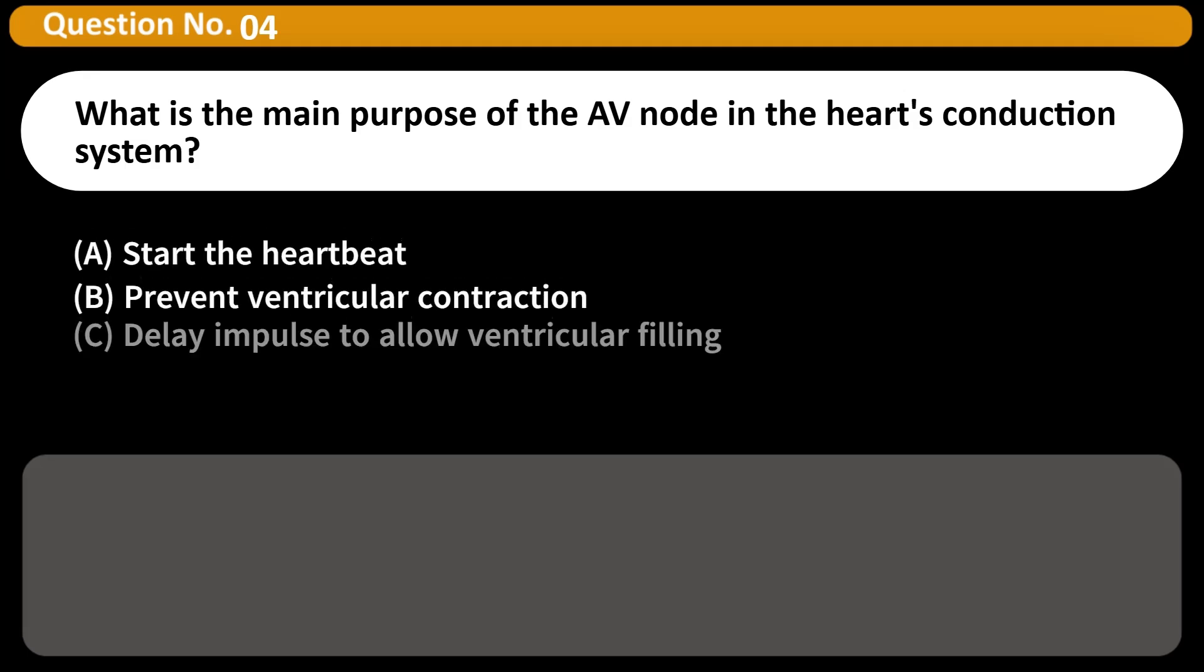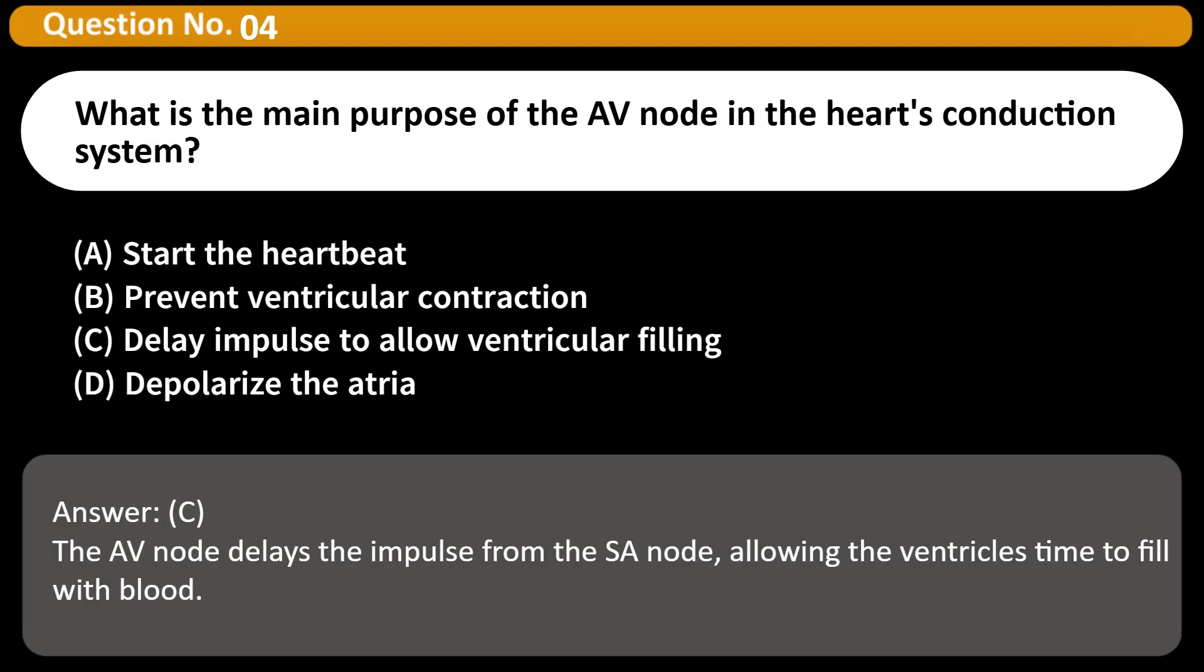What is the main purpose of the AV node in the heart's conduction system? A. Start the heartbeat B. Prevent ventricular contraction C. Delay impulse to allow ventricular filling D. Depolarize the atria Answer C. The AV node delays the impulse from the SA node, allowing the ventricles time to fill with blood.